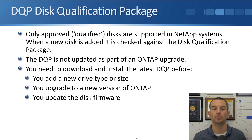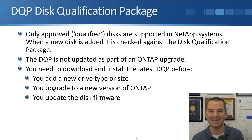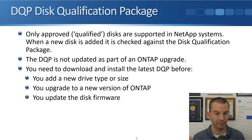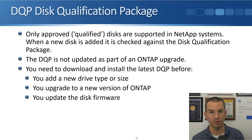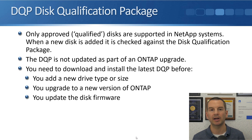The last thing is the DQP — the Disk Qualification Package. Only approved, qualified disks are supported in NetApp systems, and when a new disk is added it is checked against the DQP. The DQP is not updated as part of an ONTAP upgrade, unlike disk firmware, so you need to download and install the latest DQP before adding a new drive type or size not already on the system, before upgrading to a new version of ONTAP, or before updating disk firmware. Before your ONTAP upgrade, upgrade the DQP first — download the file from the NetApp website, run a couple of commands at the command line, and you're done.